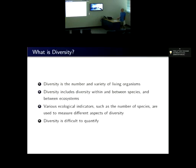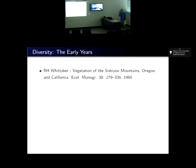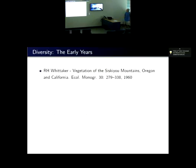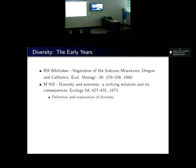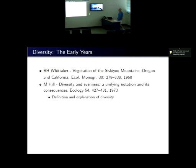Diversity comes in various flavours — within and between species, across ecosystems — and people use various ecological indicators such as number of species to measure different aspects of diversity. There's this idea that there's no such thing as a single diversity. It goes back to Whittaker, around about the 60s, who wrote a large monologue, about 50 pages in Ecology, largely descriptive, outlining ideas about hierarchies of diversity and how diversity changes over landscapes.